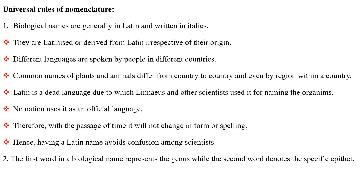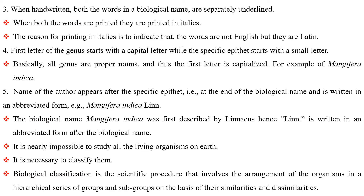Second, the first word in the biological name represents the genus while the second word denotes the specific epithet. Third, when handwritten, both words in a biological name are separately underlined. When both words are printed, they are printed in italics. The reason for printing in italics is to indicate that the words are not English but Latin.